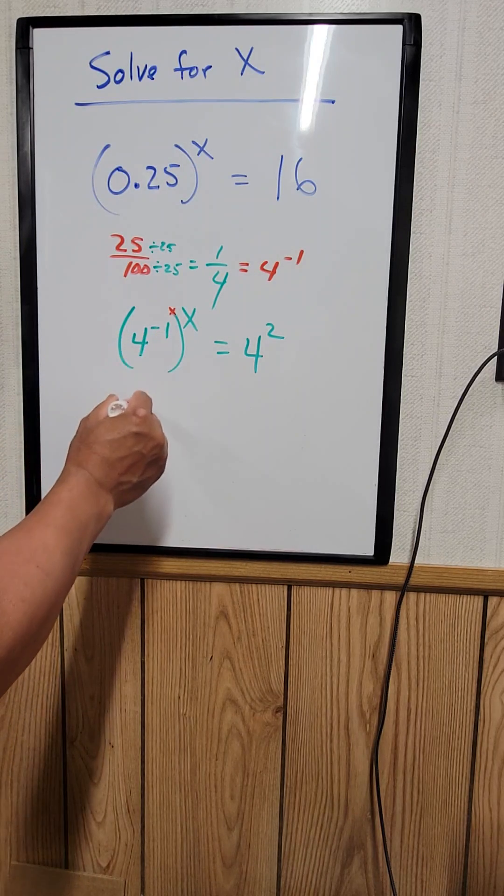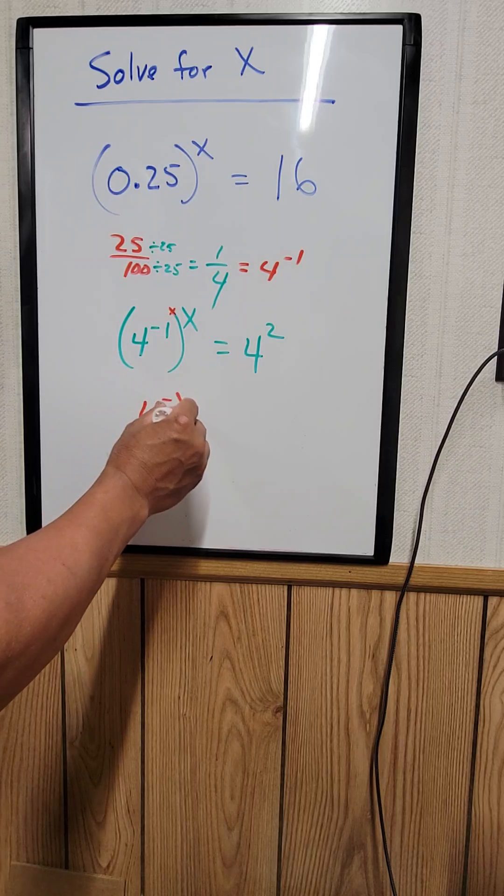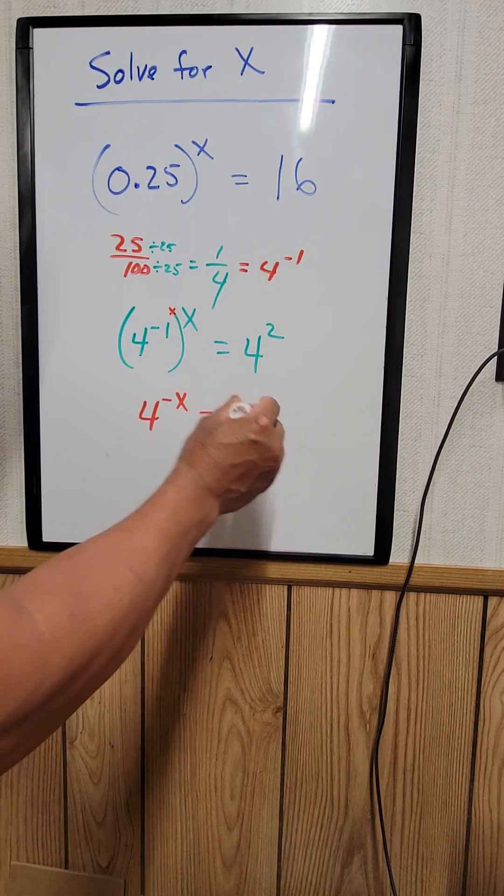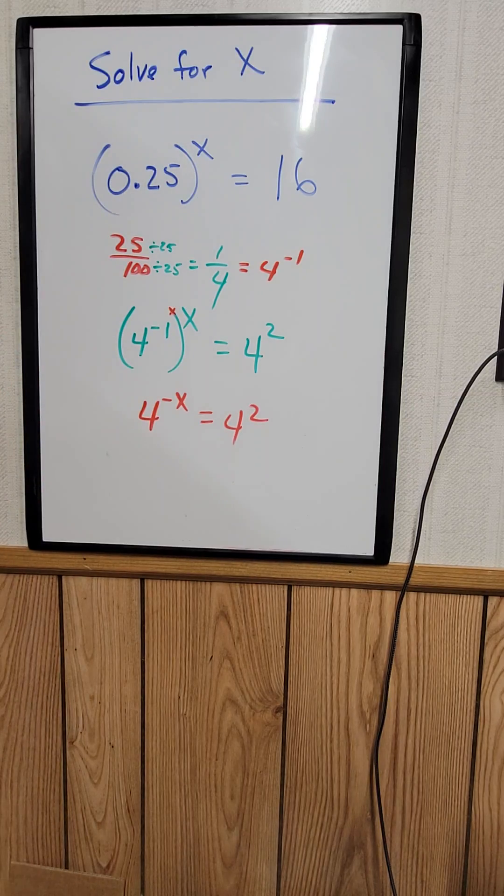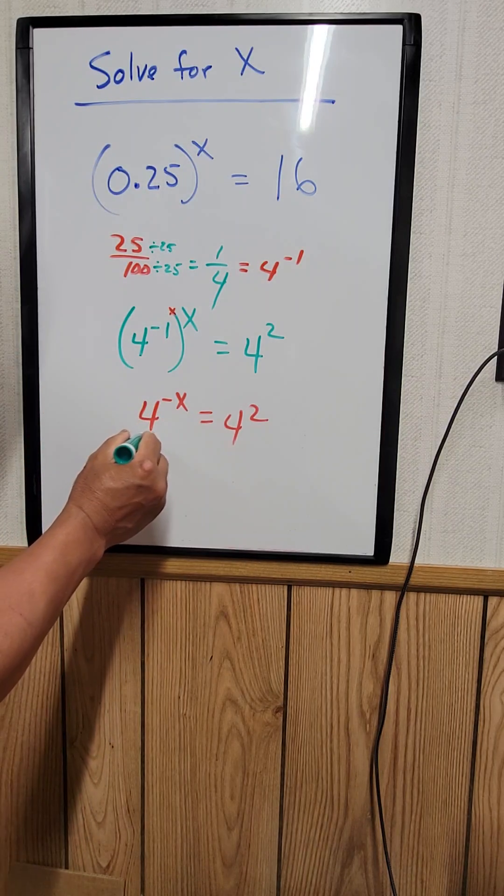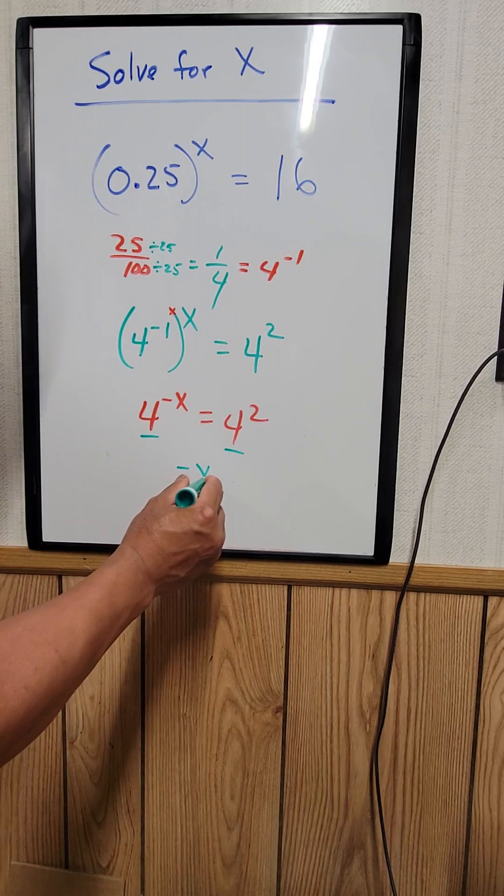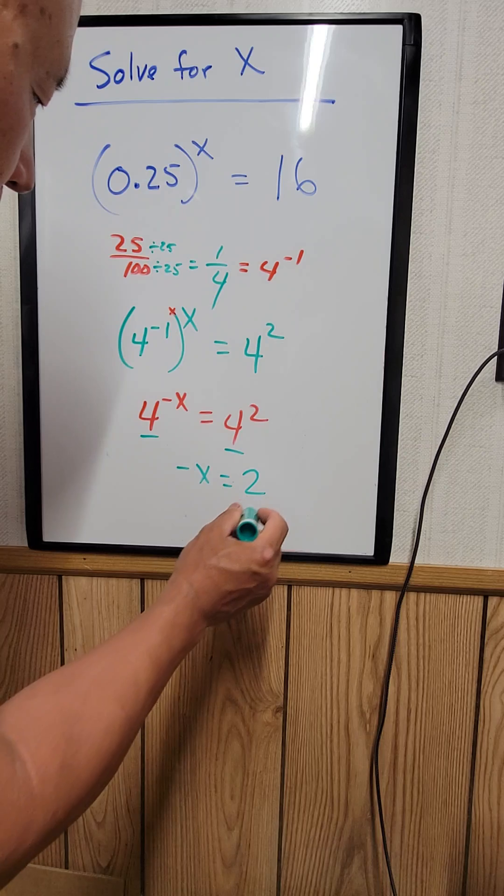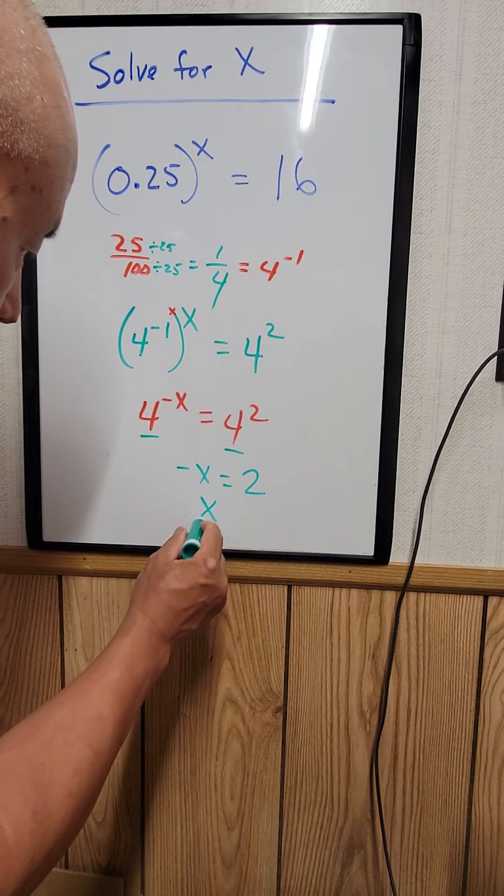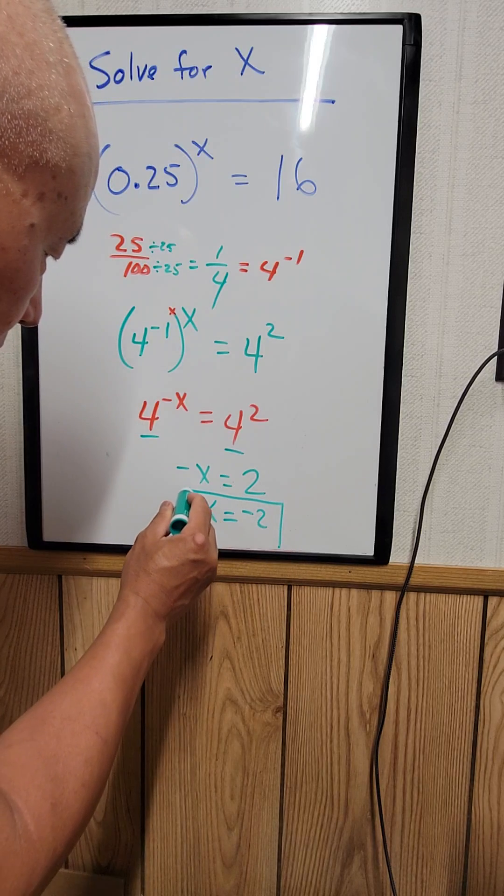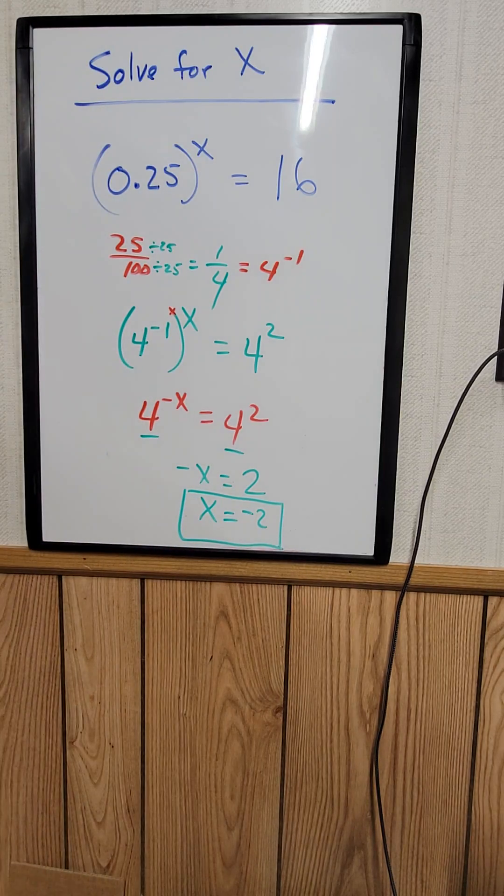Since the bases are the same, the exponents must be the same. So negative x equals 2, which means x equals negative 2. That's your answer. Thank you very much for watching. If you like my videos, please like, share, and subscribe.